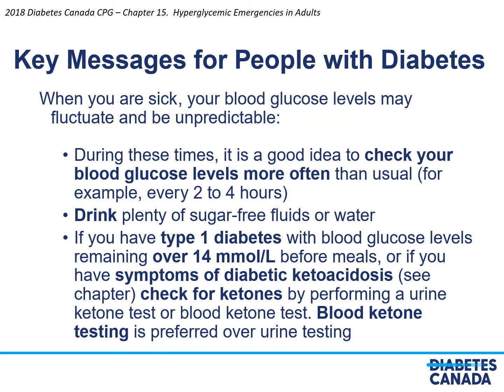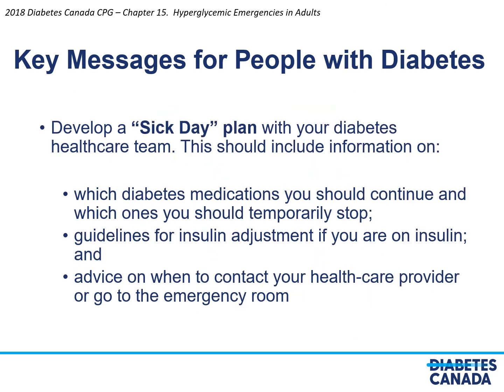Key messages for people with diabetes: if you are sick, your blood glucose levels may fluctuate and be unpredictable. Check your blood glucose levels more often than usual — for example, every 2 to 4 hours — and drink plenty of sugar-free fluids or water. If you have type 1 diabetes with blood glucose remaining over 14 millimoles per liter before meals, or if you have symptoms of DKA, check for ketones using a urine or blood ketone test — blood ketone testing is preferred. Develop a sick day plan with your diabetes health care team, including which medications to continue or temporarily stop, guidelines for insulin adjustment, and advice on when to contact your health care provider or go to the emergency room.